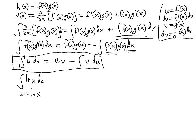Since u·dv is the integrand, ln(x) will be u because we're going to differentiate it, and dv = dx because it's already differentiated for us — we integrate dv. So dv = dx, du = (1/x)dx since the derivative of ln(x) is 1/x, and integrating dv gives v = x.